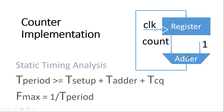If using a ripple carry adder, the delay will be doubled, and this delay feeds into the equation. The adder delay keeps increasing with the width of the counter, impacting the minimum time period of operation. As the adder delay increases, the minimum time period of operation also increases and the maximum operating frequency keeps decreasing. For a very large-width counter — for example, 128 bits — operating at very high frequency will have very high chances of failure and setup violations.